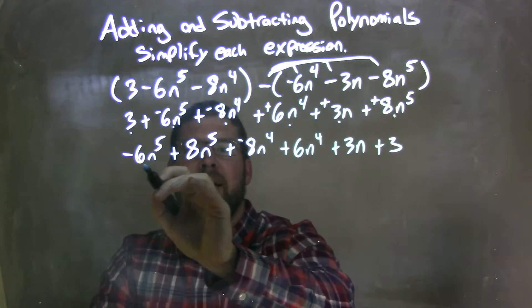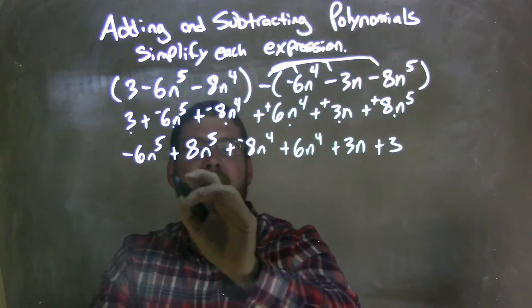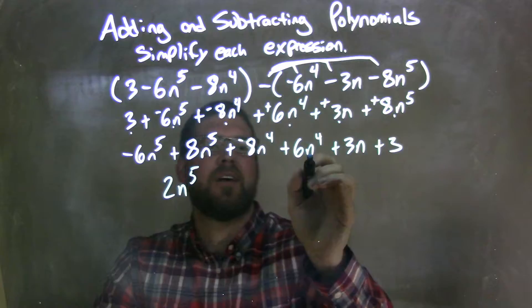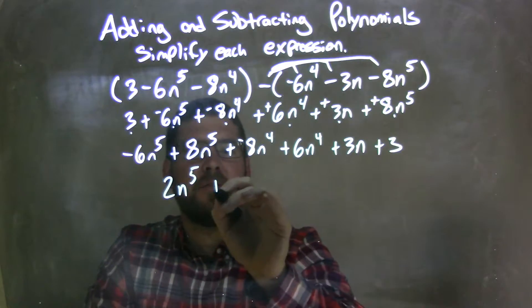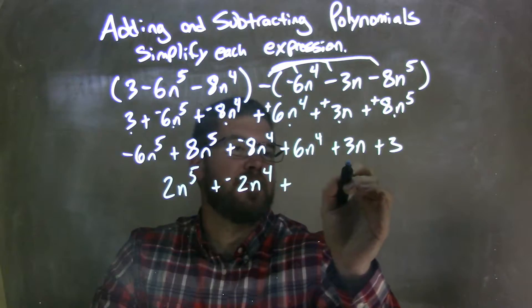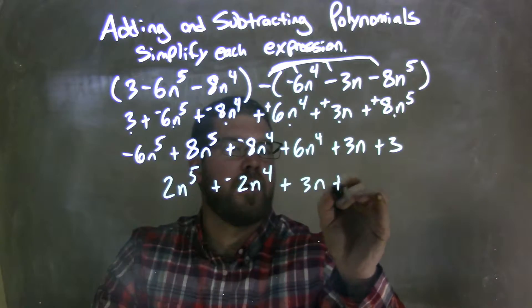Highest degrees first. So negative 6n to the 5th plus 8n to the 5th is 2n to the 5th. Negative 8n to the 4th plus a 6n to the 4th is a negative 2n to the 4th. Then we add just a plus 3n left. 3n plus 3.